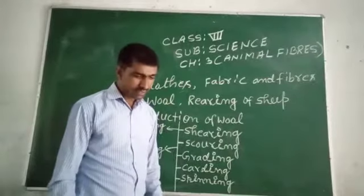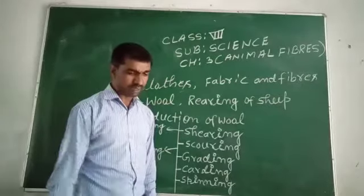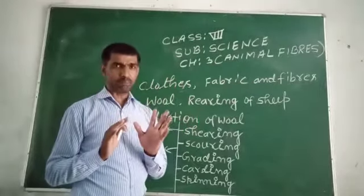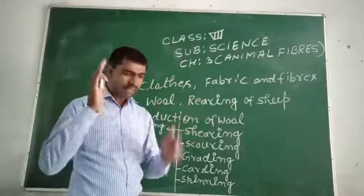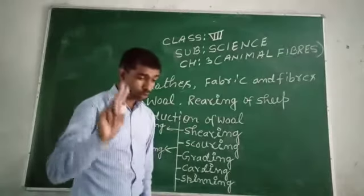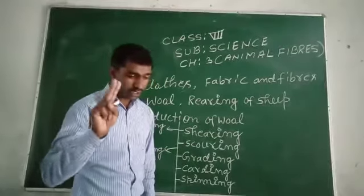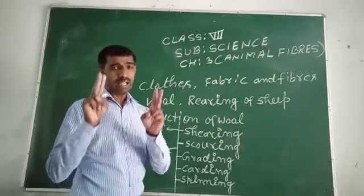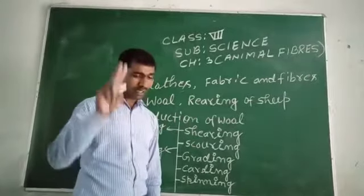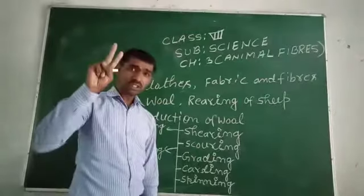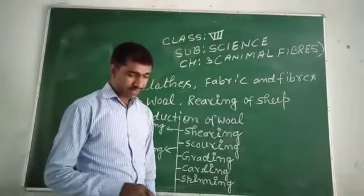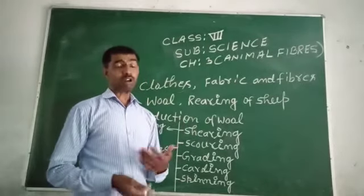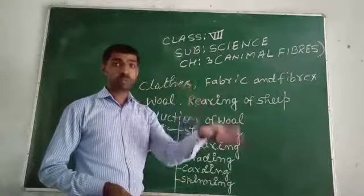For example, wild sheep have two types of hair on their bodies — coarse, longer hair, and soft, shorter hair. Selective breeding is done to get sheep with long soft hair. That means long soft hair is the desired, good quality of hair obtained from the sheep.